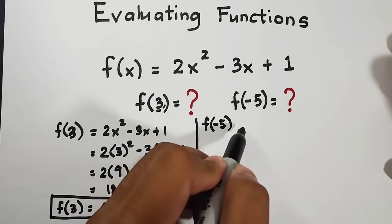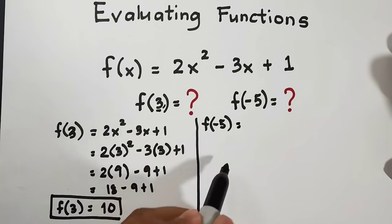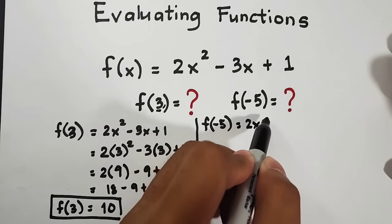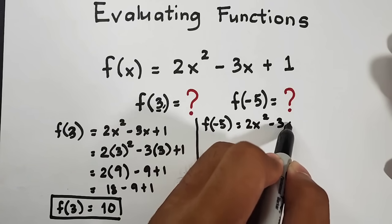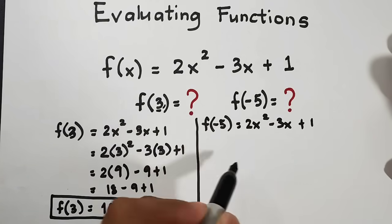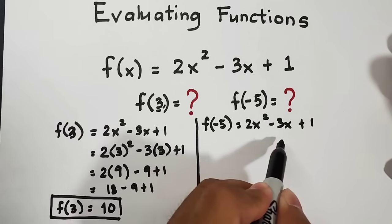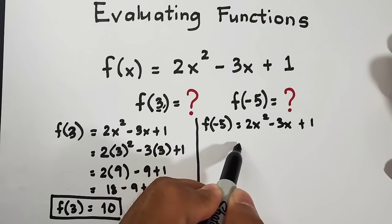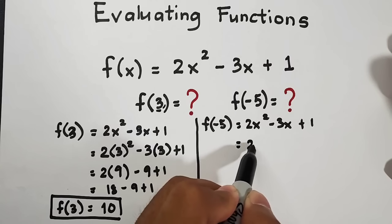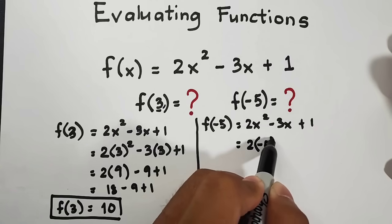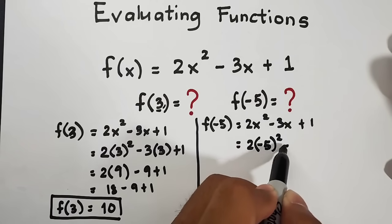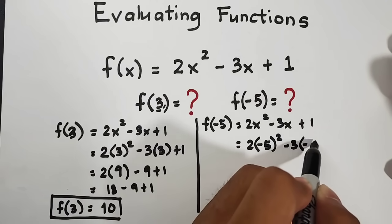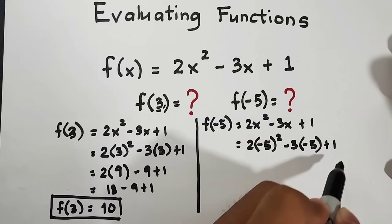This means guys, your input is negative 5. Then copy your original function, 2x squared minus 3x plus 1. All the x variables here will be replaced by negative 5.